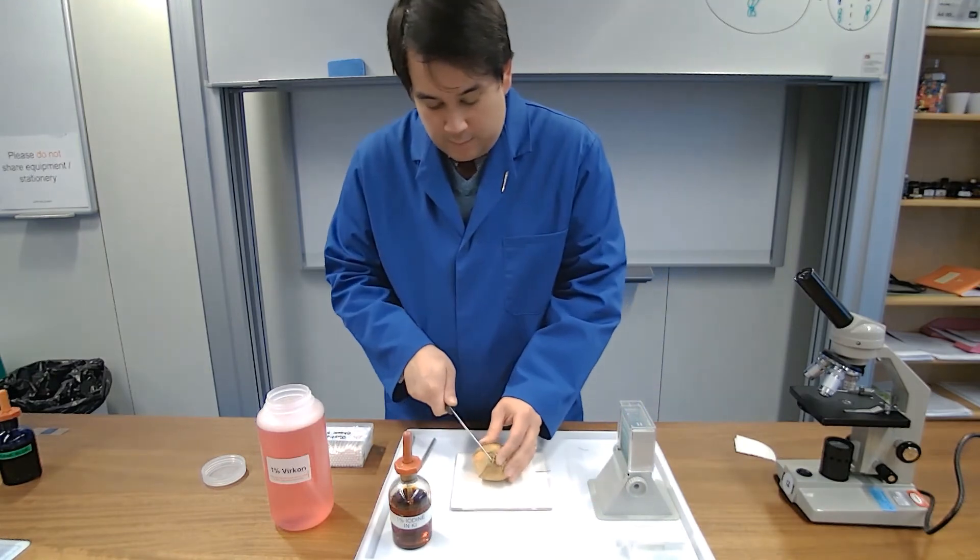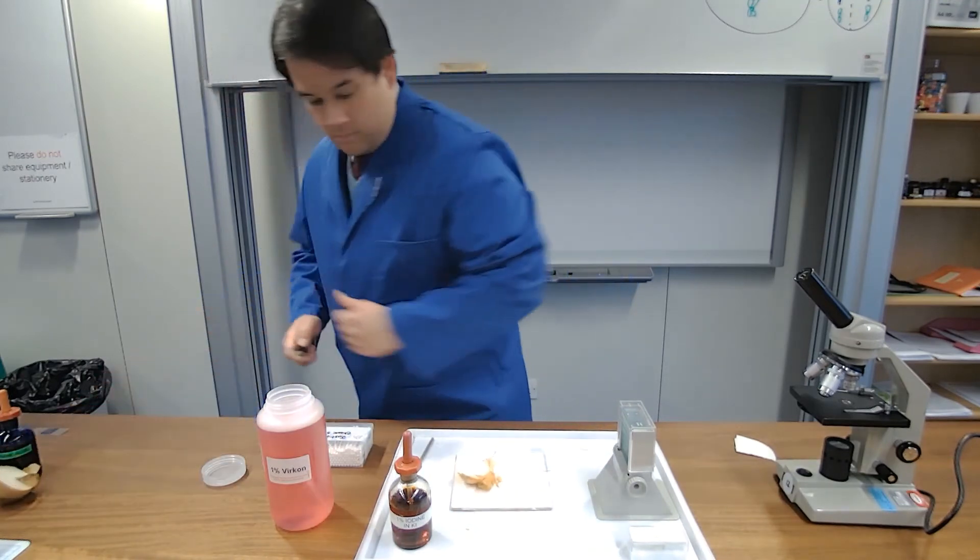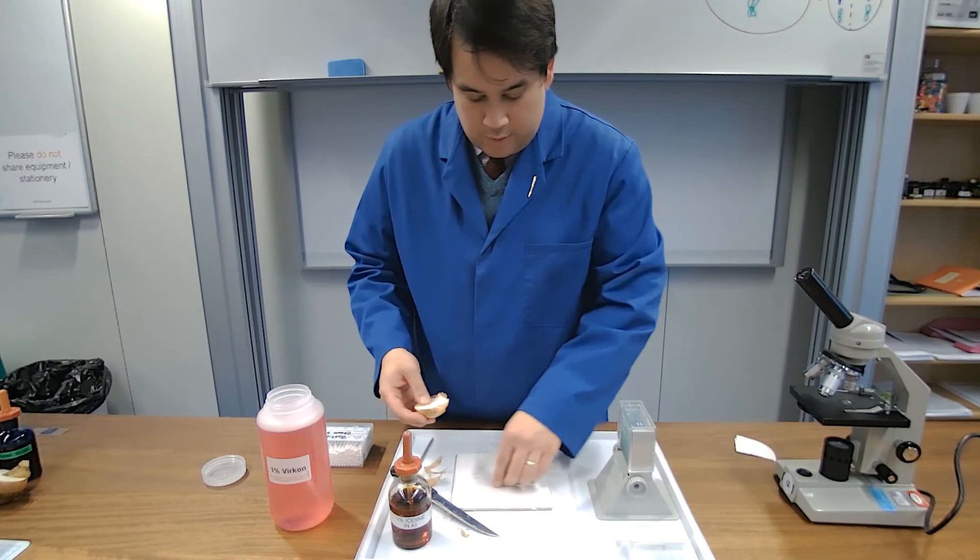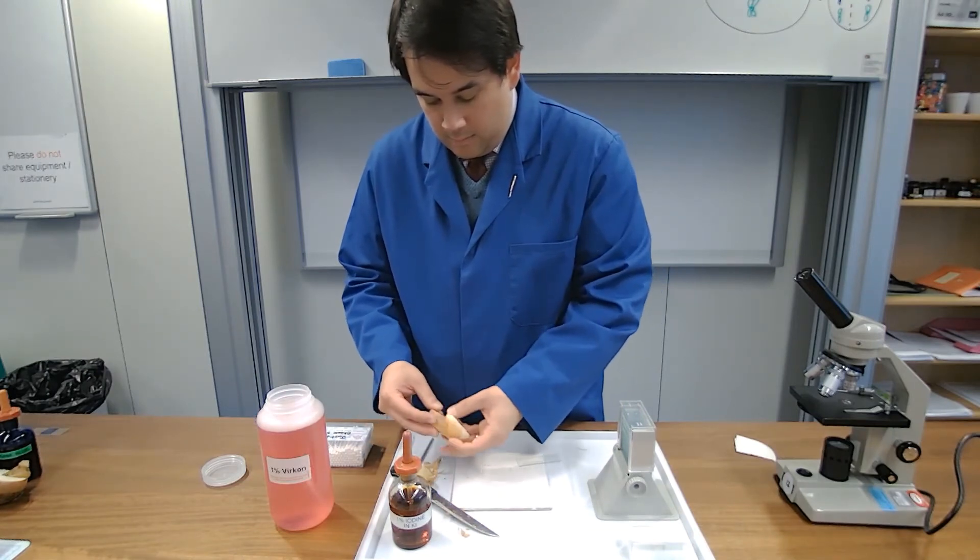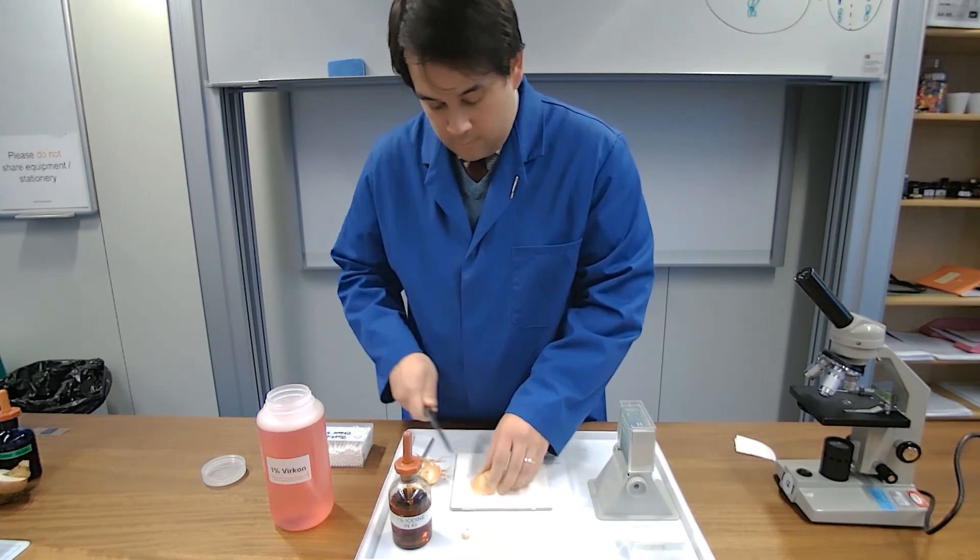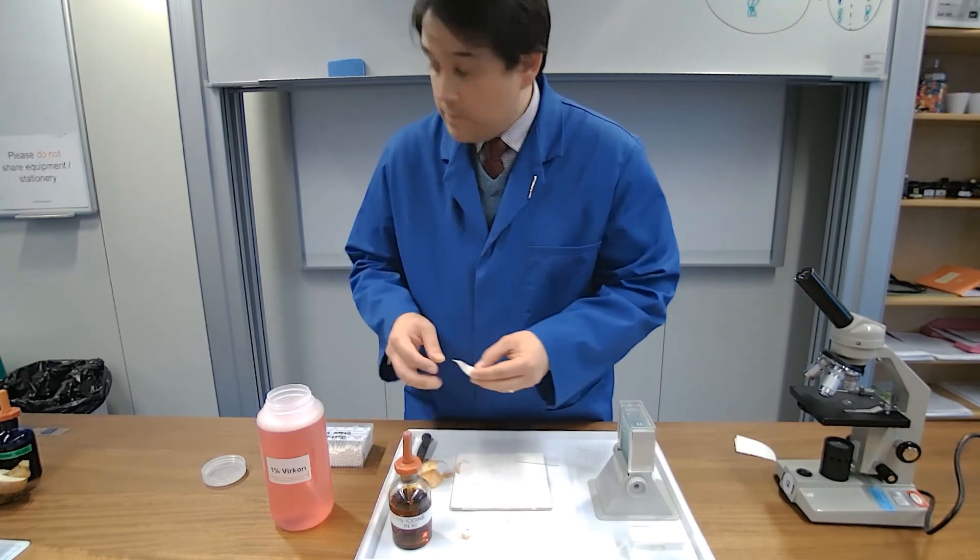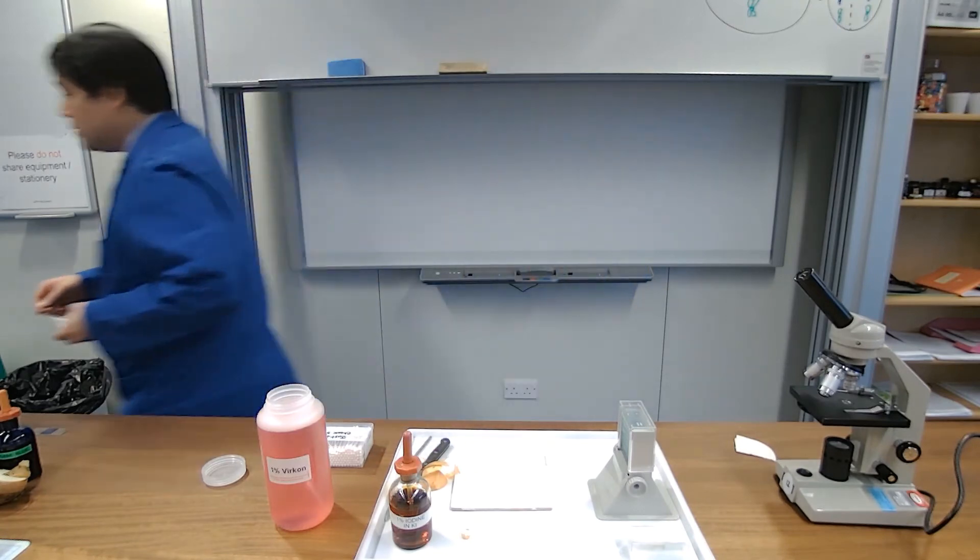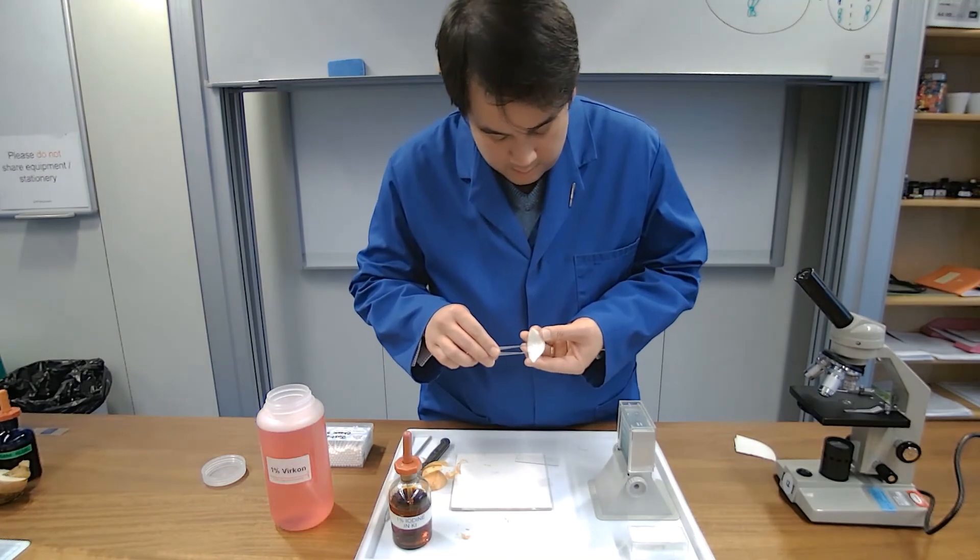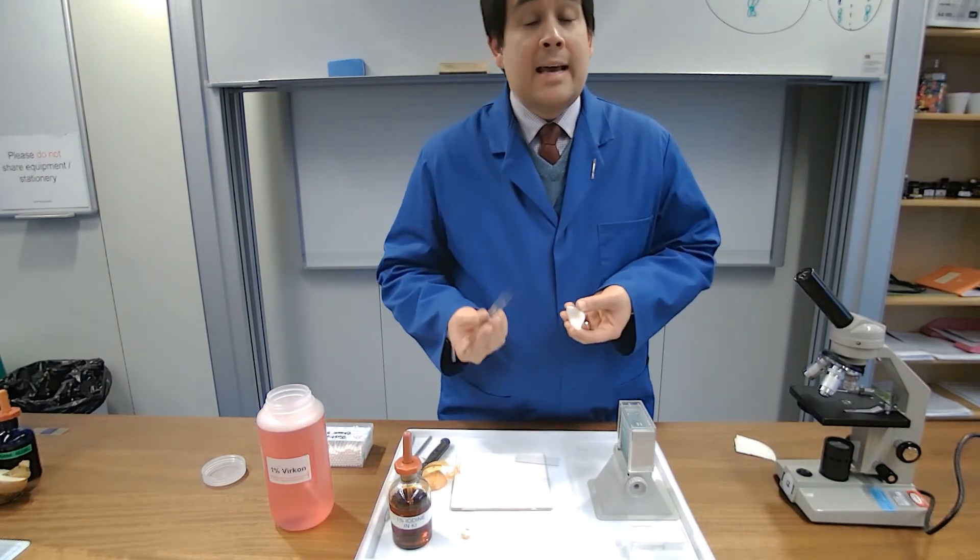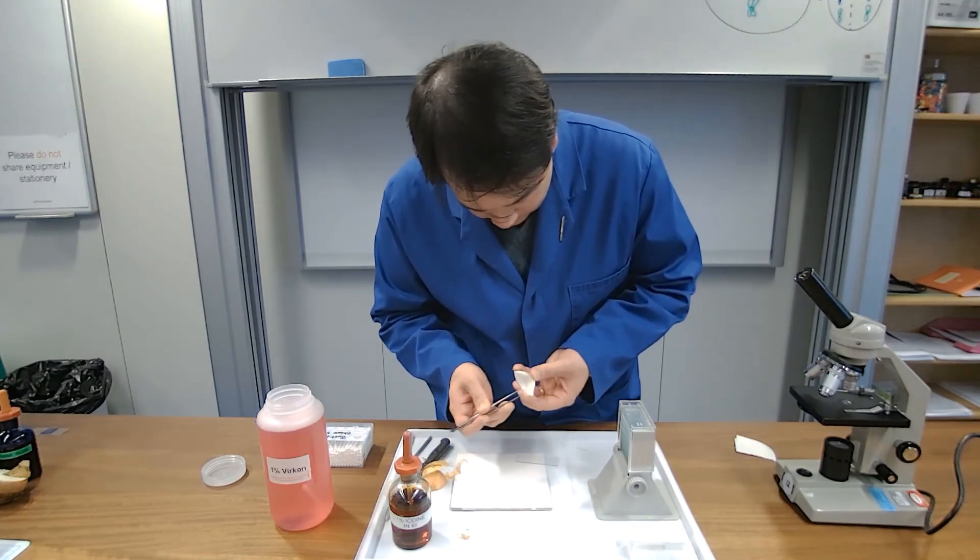So once again slide in readiness and cover slip ready to go. If you just cut a small section of this, we're going to be able to use just a small thin layer of the onion. As you can see the thinner the section the better because light needs to pass through the specimen.